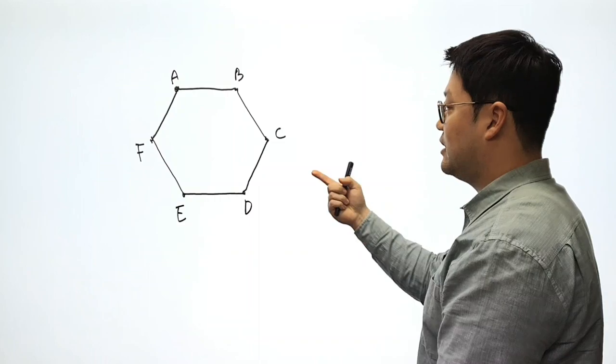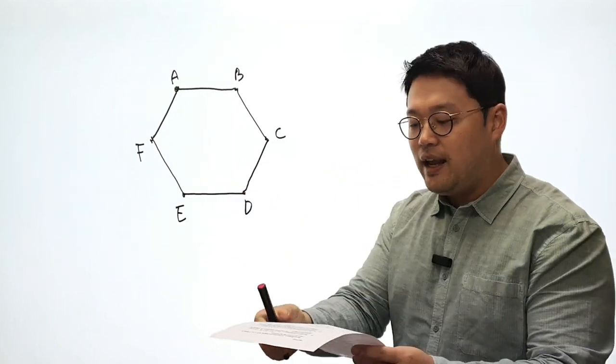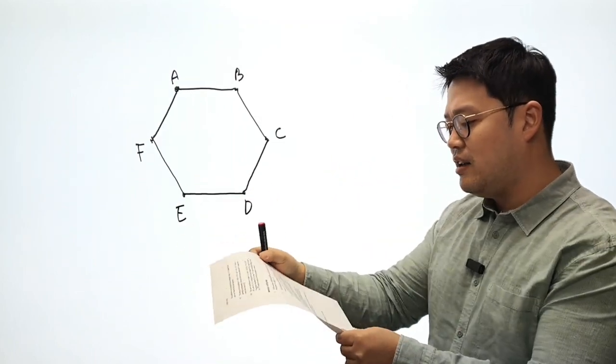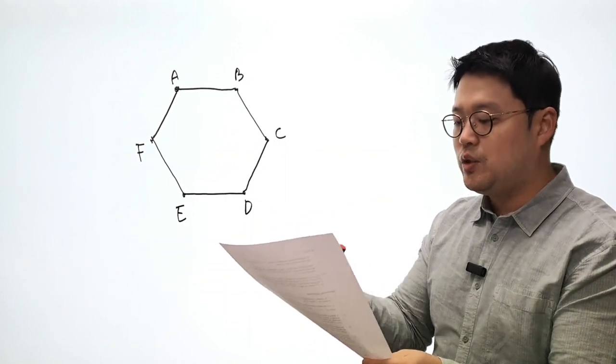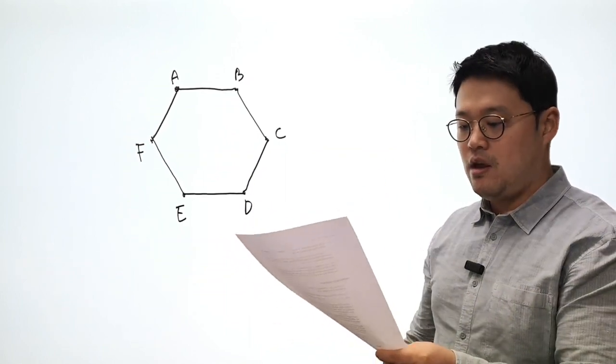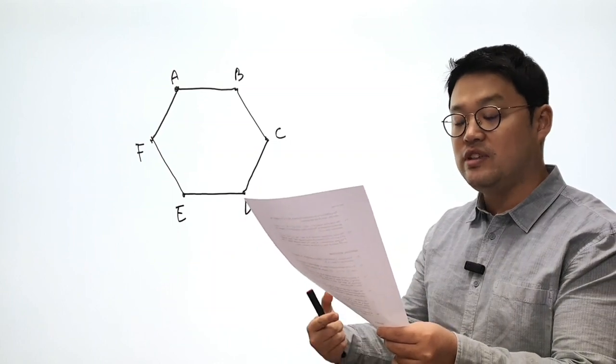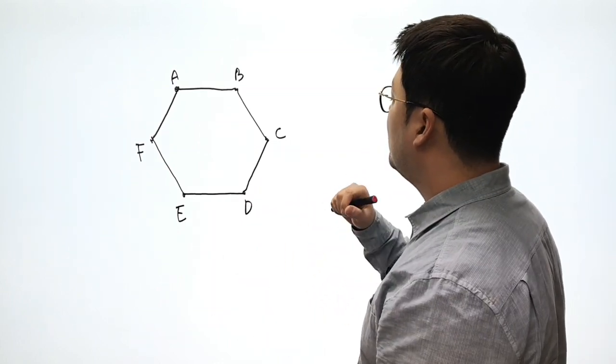All right. So hopefully that looks like a regular hexagon to your eyes. And we have A, B, and C are the centers of three mutually externally tangent circles. Compute the radius of the smallest of these circles. All right. So here we go.